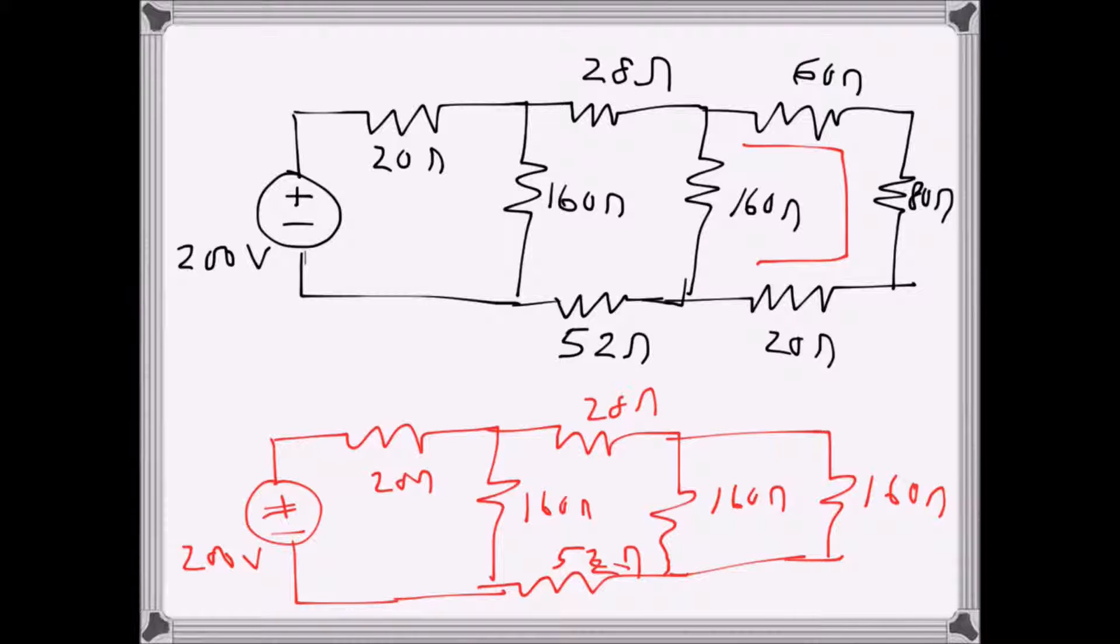Instead of drawing the circuit again I will just write one resistance here, replace with one resistance. 160 parallel with 160 is of course half, so that will be just 80. So I will remove this one and just write 80 because this is the equivalent parallel, so that's 80 ohms there.